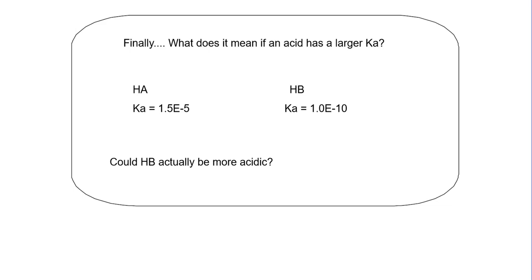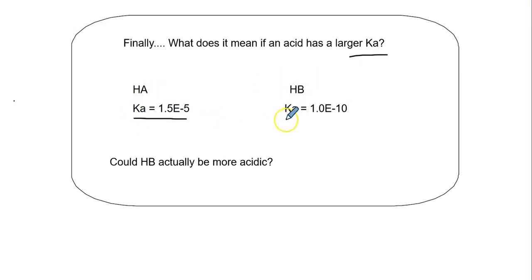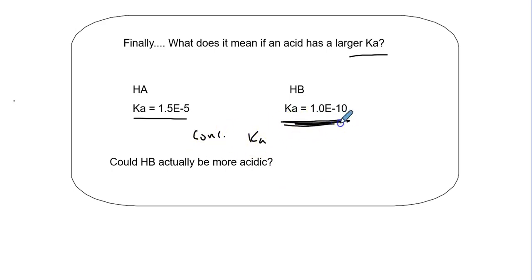What does it mean if an acid has a larger Ka? This circles back to strength. HA and HB - could HB actually be more acidic? Yes, because concentration and Ka values both come into play. If HB has a smaller Ka but a high enough concentration, it could still be more acidic, though the concentration might need to be unrealistically large.